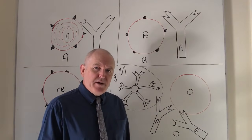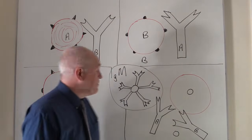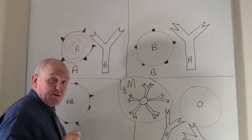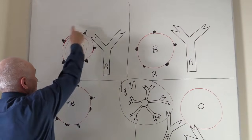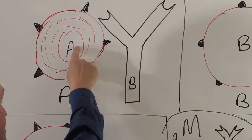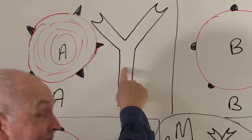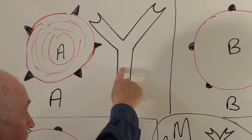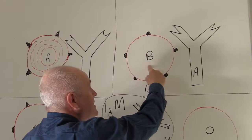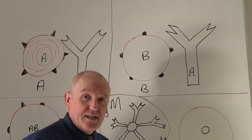We've looked at the ABO system and I'm just going to recap that very briefly. Blood group A is determined by the red cell — it has A antigens. But if someone is blood group A, they're going to have B antibodies, or anti-Bs, in their plasma. If someone's blood group B, the red cells are B, but there are going to be anti-A antibodies in the plasma.